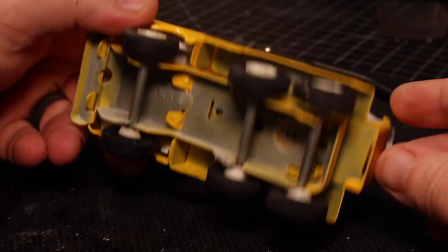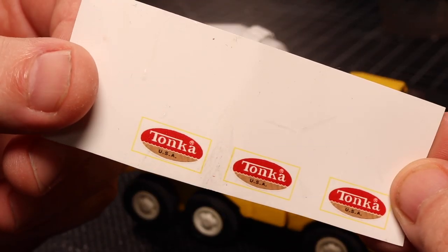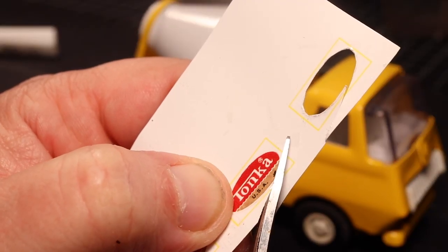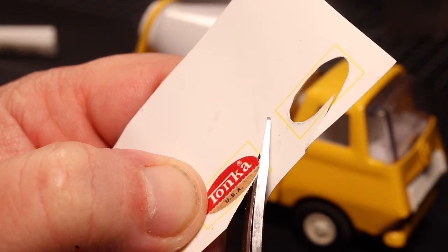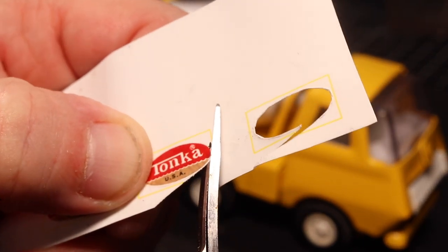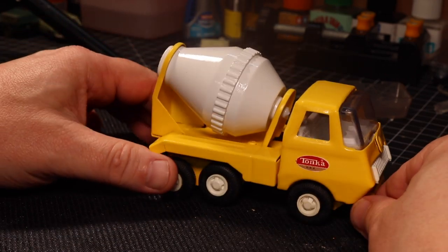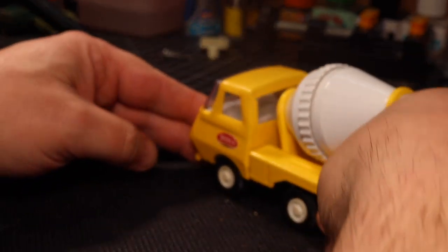Last Tonka restoration, I created some water slide decals on the printer, and luckily I still had three left, so I just had to cut those out and put them on. And one last check to make sure everything functions properly before I give it to the little guy. He's going to love this.